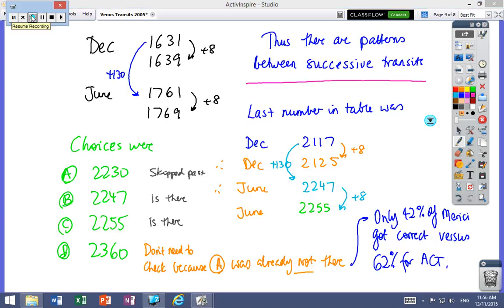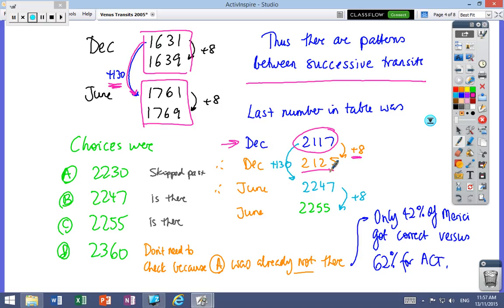Hopefully you've had a go. Between all the transits there's patterns. In between the Decembers there's an eight year gap, in between the Junes there's an eight year gap, and between the first December and first June there's a 130 year gap. In the table, the last number you were given was 2117, which was the first of December. Then you add eight years—that's 2125. That's not one of the distractors, so we can ignore that.